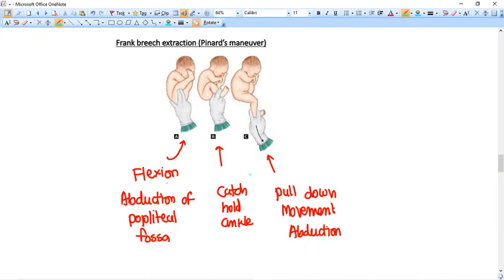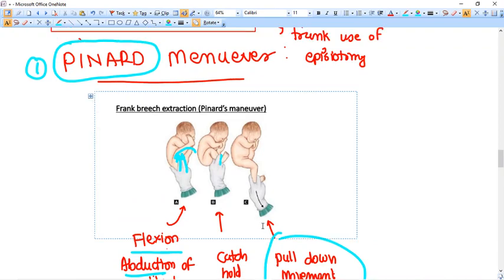For doing this, what you need to do is you just flexion abduction of the popliteal fossa here. You give pressure at here. That's why the limb is just bent and then you catch hold the ankle here like this. And then you pull down the ankle and by then you get one limb extracted. You do the same with the second limb. That's why you extracted the limbs. And now if both limbs are out, it's very easy to the buttocks to come out. So it was the first maneuver, Pinard maneuver.